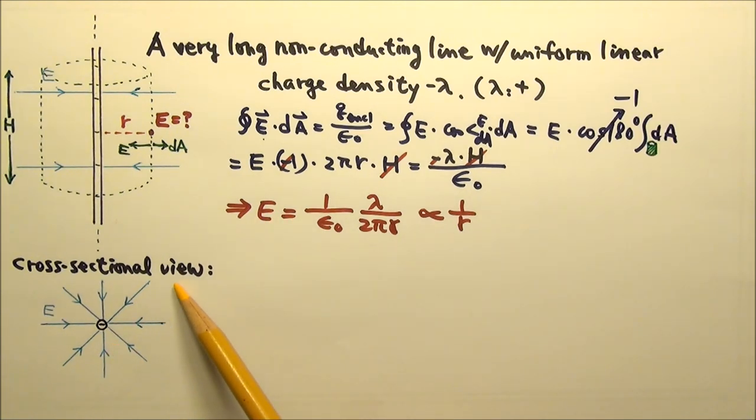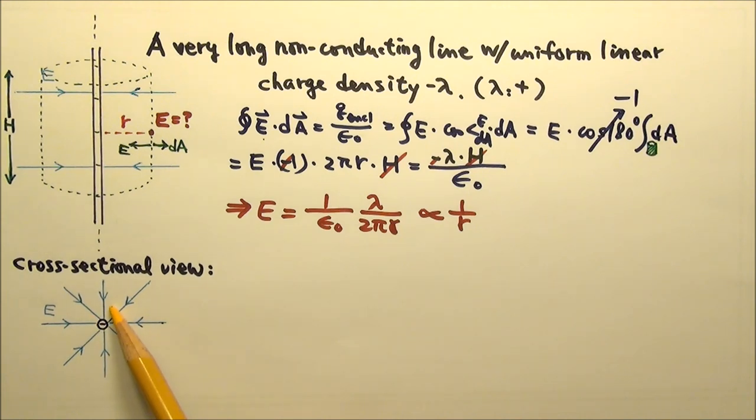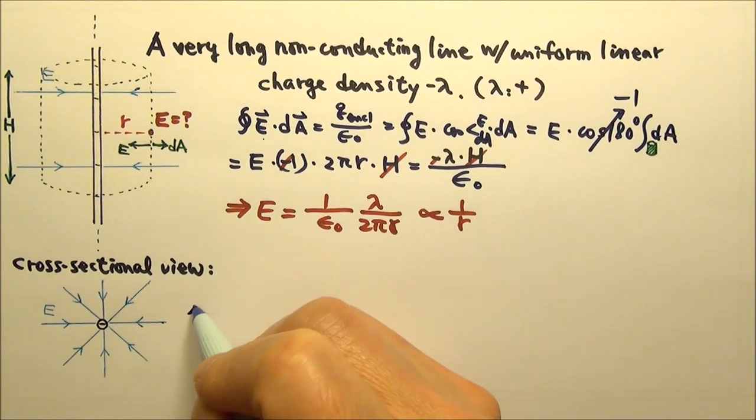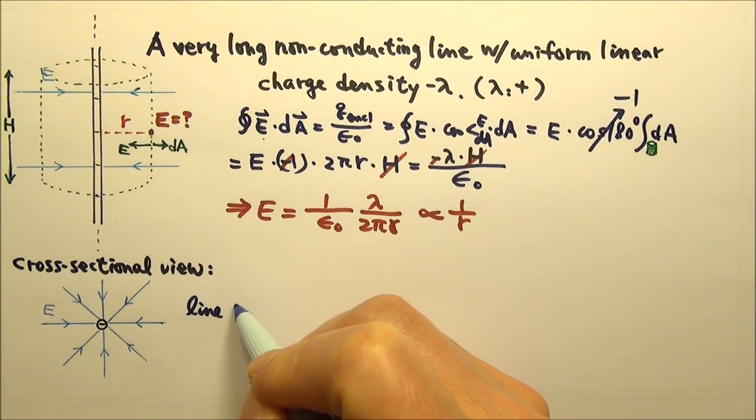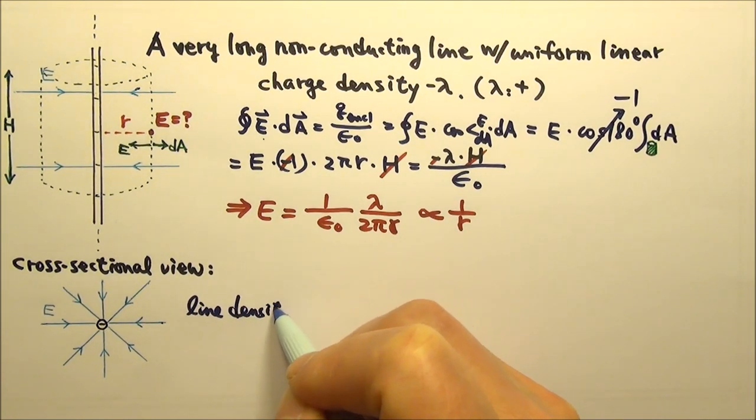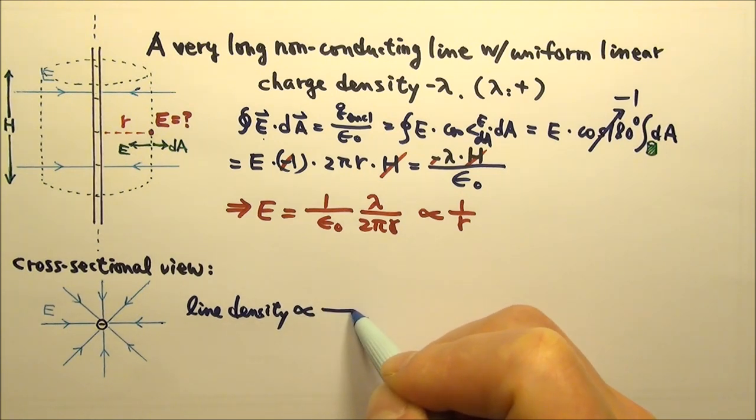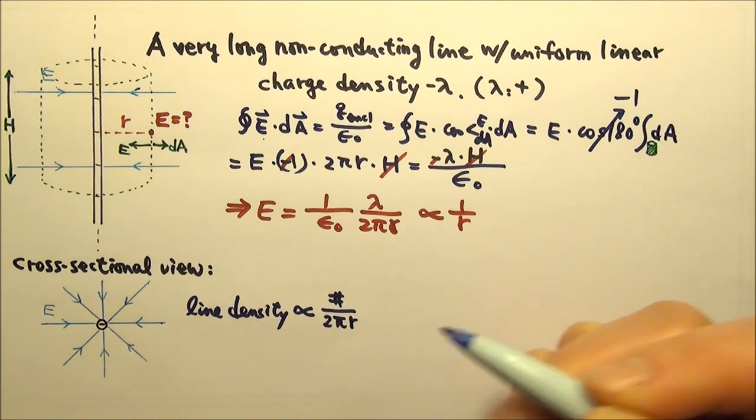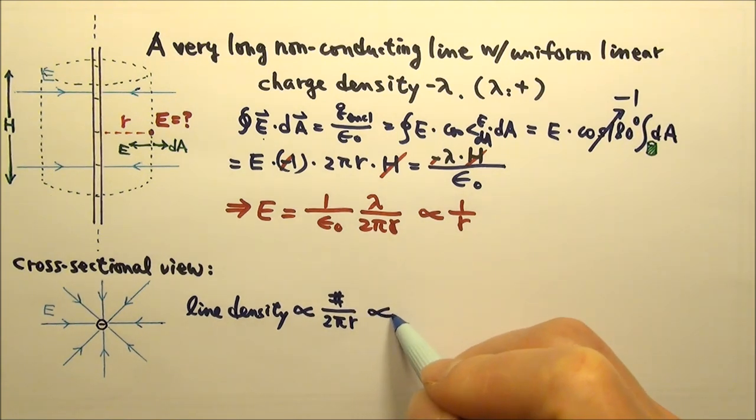If you look at the cross-sectional view, the same number of field lines are spread out onto circles. The farther away, the bigger the circle the same number of lines are spread out onto. So the field line density is proportional to the number of field lines divided by the circumference it is spread out onto, 2πr. So this is proportional to 1/r.